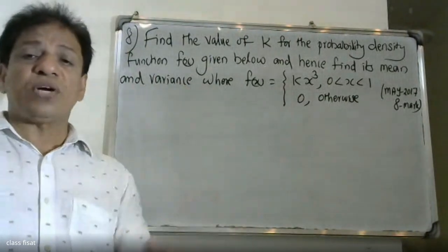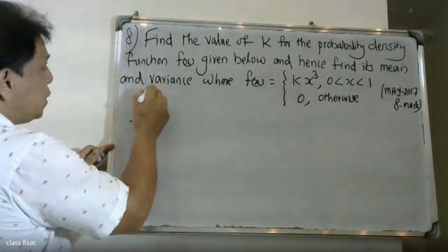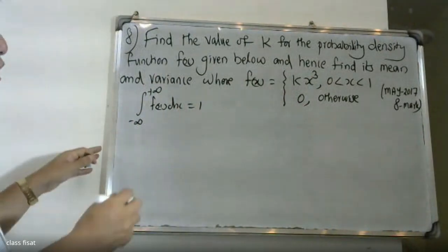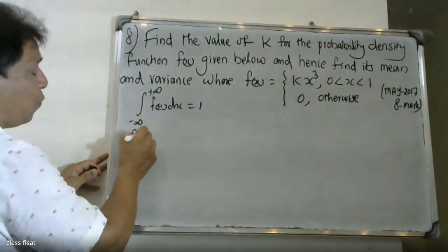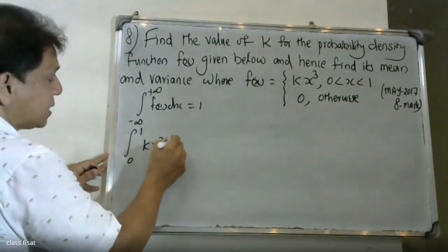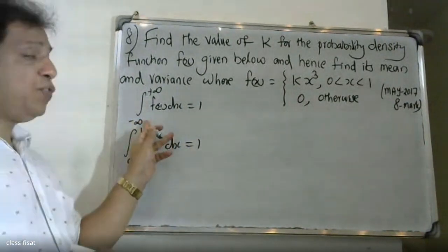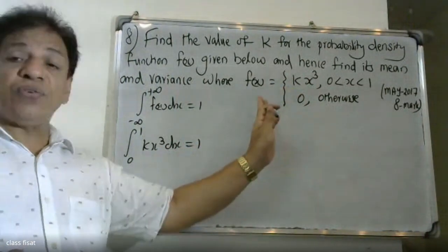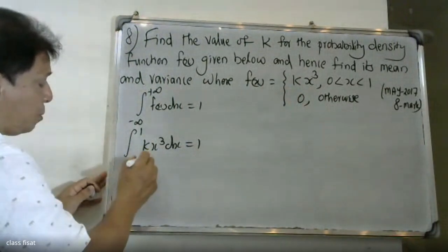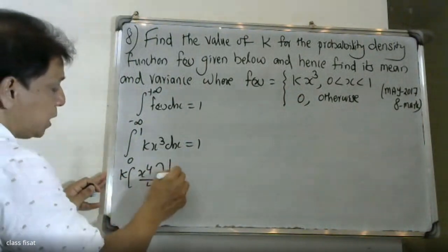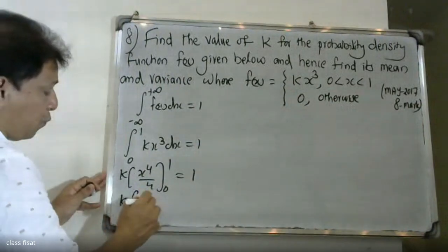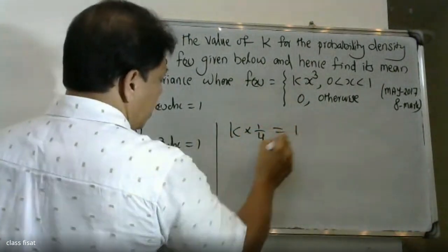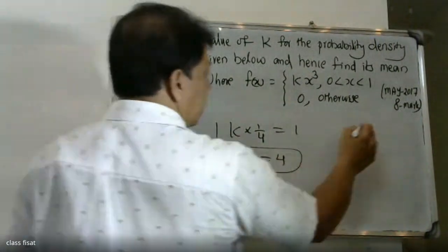A probability density function must satisfy the condition that the integral from minus infinity to plus infinity of f of x dx is equal to 1. The limits reduce to 0 to 1, since the function is zero in all other cases. So we integrate k x cubed, giving k times x raised to four by four from 0 to 1, which equals 1.